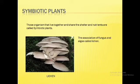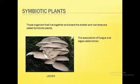Finally, there are symbiotic plants. In symbiotic nutrition, two organisms live together and share their shelter and nutrients — both benefit from each other. An example is lichen, which is a combination of algae and fungus living together. This mutually beneficial relationship is called symbiosis.